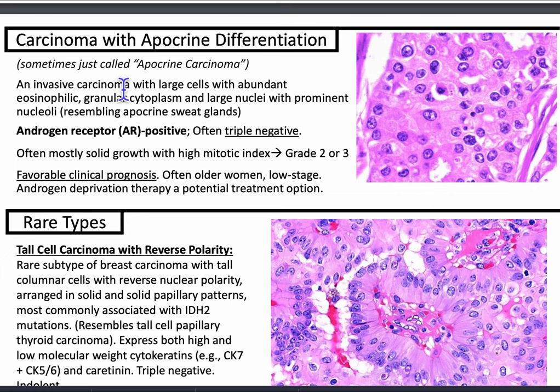Carcinoma with apocrine differentiation, sometimes called apocrine carcinoma, is an invasive carcinoma with large cells with abundant eosinophilic granular cytoplasm and large nuclei with prominent nucleoli resembling apocrine sweat glands. They are androgen receptor positive, often triple negative, and often present as a solid growth with high mitotic index, being grade 2 or 3, with favorable clinical prognosis. It's often seen in older women at low stage, and androgen deprivation therapy is a potential treatment option.